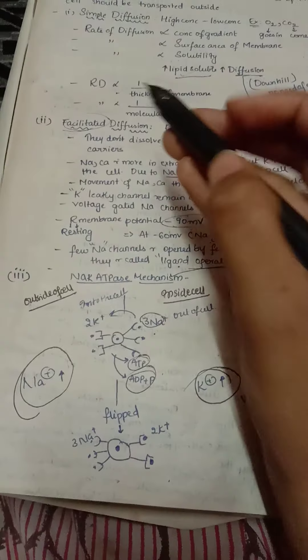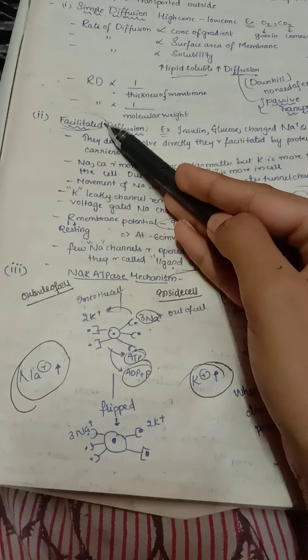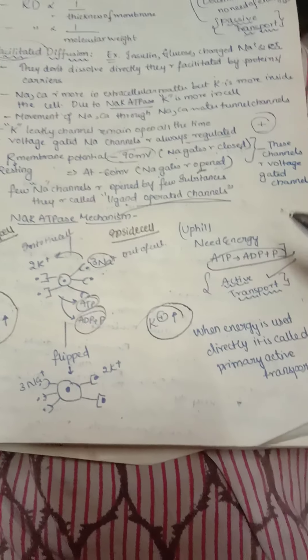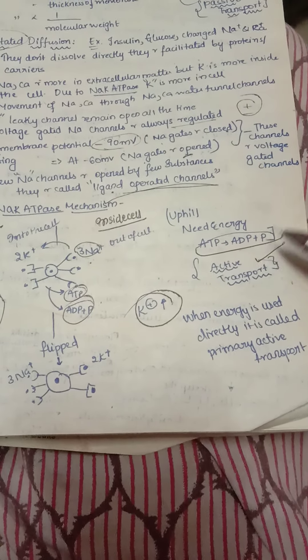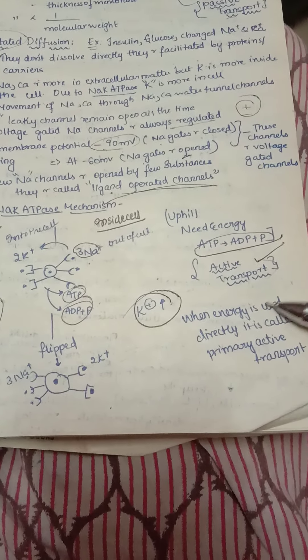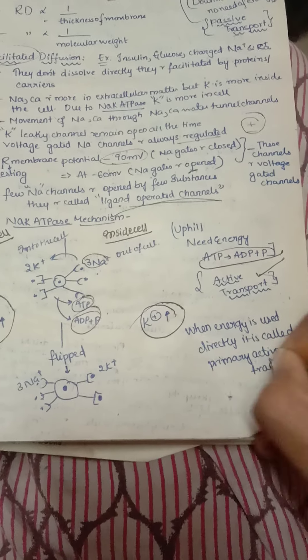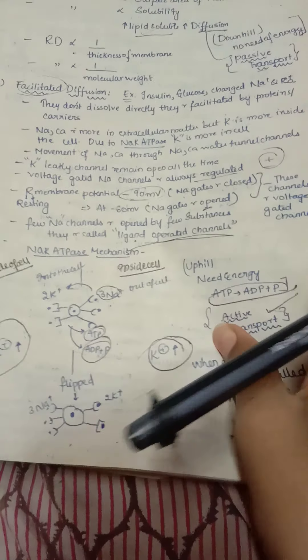This pump utilizes ATP, so it is an uphill process requiring energy — it is active transport. ATP is converted into ADP and phosphate. Passive transport examples are simple diffusion and facilitated diffusion, but sodium-potassium ATPase is active transport. When energy is used directly, it is called primary active transport; when used indirectly, it is called secondary active transport.